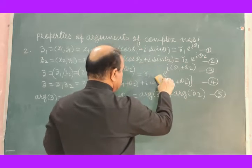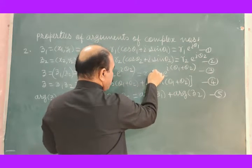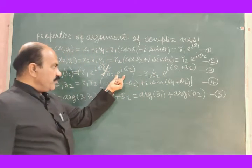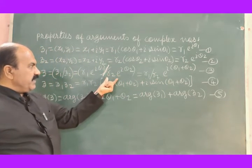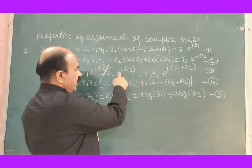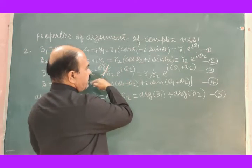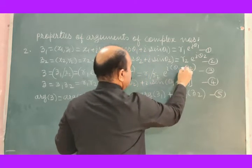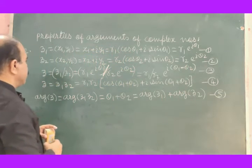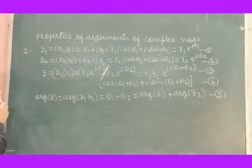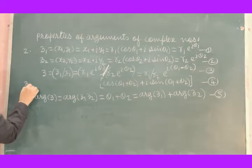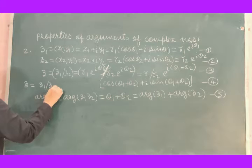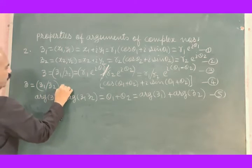Here we have R1 divided by R2. The e to the power iθ2 from the denominator can be taken to the numerator — it will become minus. So when i is taken common, the sign coming here will be minus, giving Z equals Z1 divided by Z2 equals R1 divided by R2 into e to the power i(θ1 minus θ2).